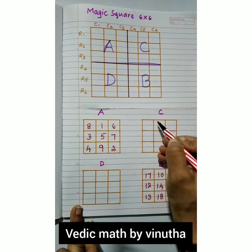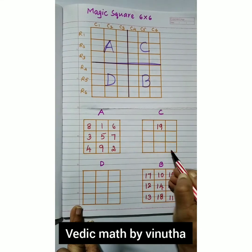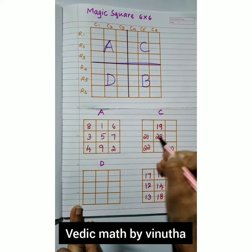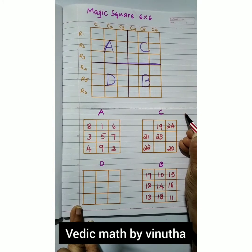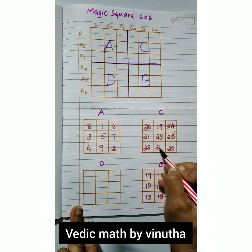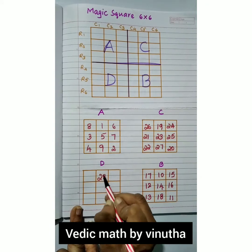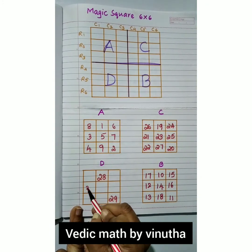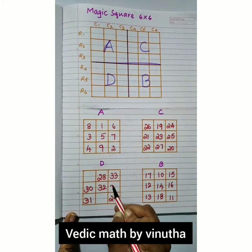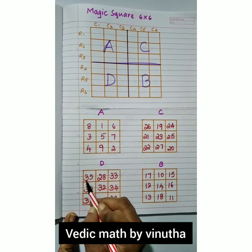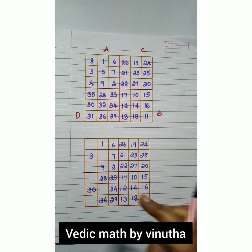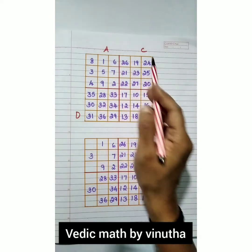Now go to box C and start from 19. Place 19, 20, 21, 22, 23, 24 diagonally. Then 25, and just right below that 25 place 26, 27. For box D, place 28, 29, 30, 31, 32, 33, 34, 35, 36. Now all 36 boxes are filled.